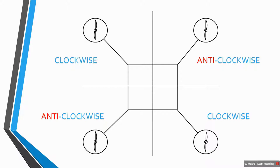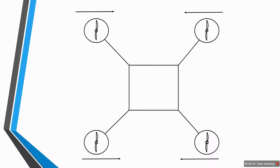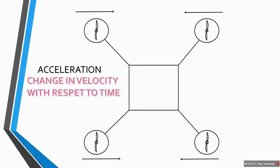To establish the equilibrium condition, the mandatory thing is that the two diagonally opposite propellers must move in the same direction and the adjacent propellers must move in the opposite direction. As shown, this propeller and this propeller move in the clockwise direction, and this propeller and this propeller move in the anti-clockwise direction to maintain equilibrium.